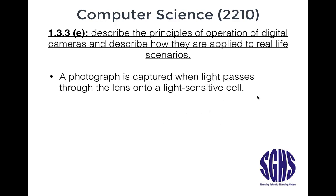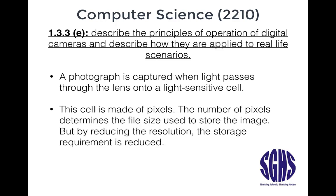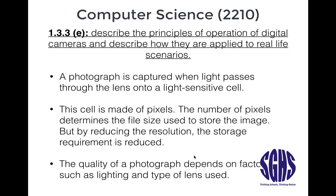A photograph is captured when light passes through the lens onto a light-sensitive cell. This cell is made of pixels. The number of pixels determines the file size used to store the image. By reducing the resolution, the storage requirement is reduced. The quality of the photograph depends on factors such as the lighting and the type of lens used.